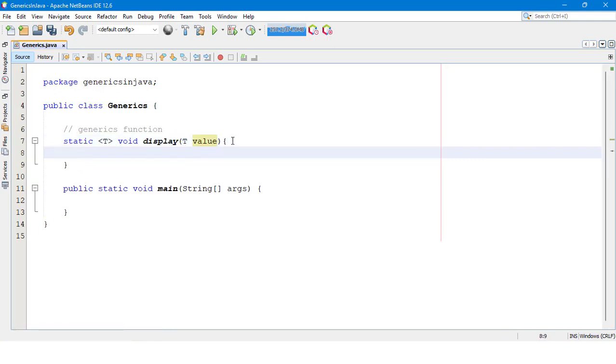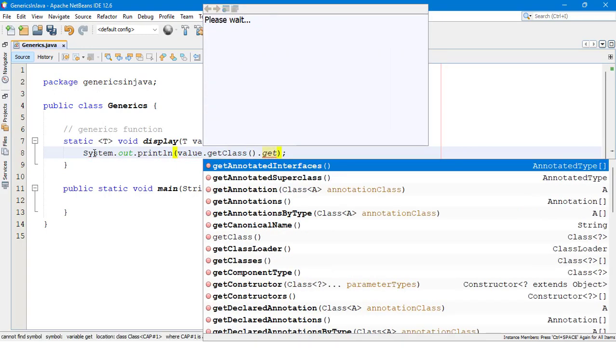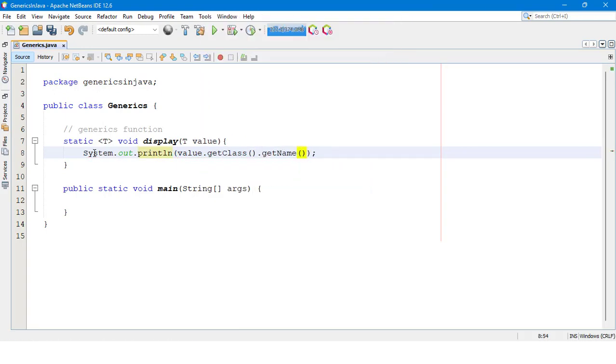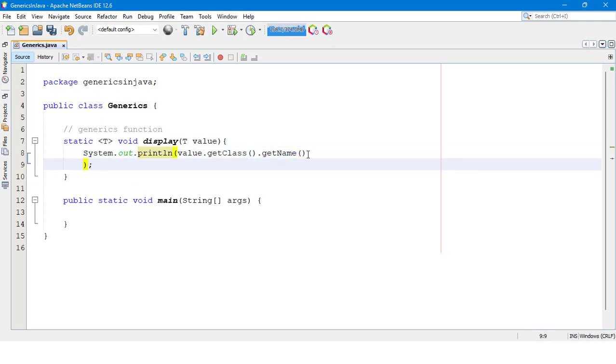That is the generics function declaration. We get class dot get - we use these generics methods. Get class is also a method. Get name is another method. For this class we use the concatenation operators and some code here to obtain the value.